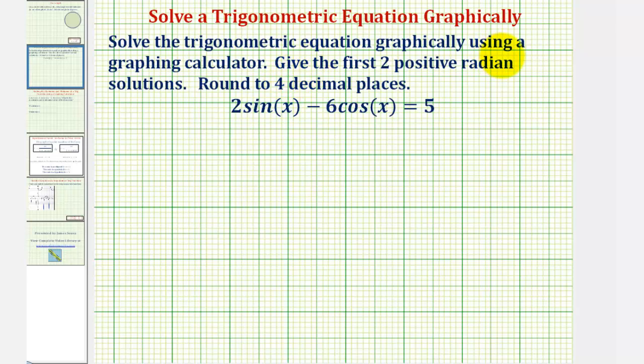We want to solve the trig equation graphically using a graphing calculator. We want to give the first two positive radian solutions rounded to four decimal places.